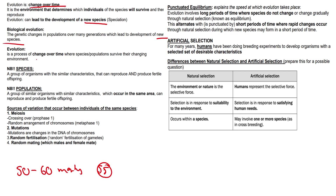Simply put, evolution is a process of change over time where species or populations survive a very changing environment. Two very important definitions: a species is a group of organisms with similar characteristics that can reproduce and produce fertile offspring. A population is a group of similar organisms with similar characteristics which occur in the same area and can produce fertile offspring. Knowing the difference is absolutely central to this section.